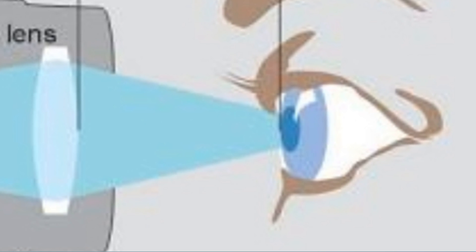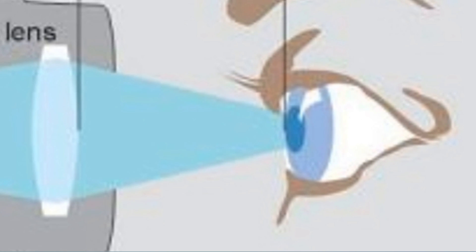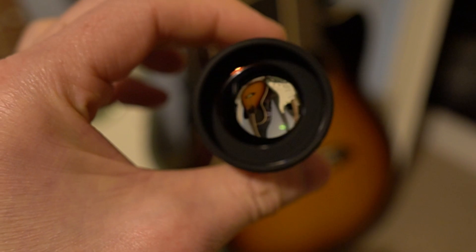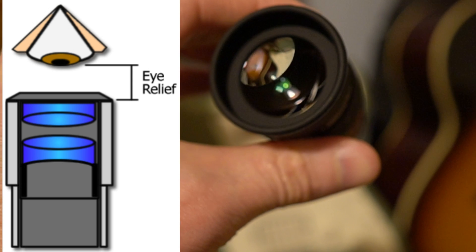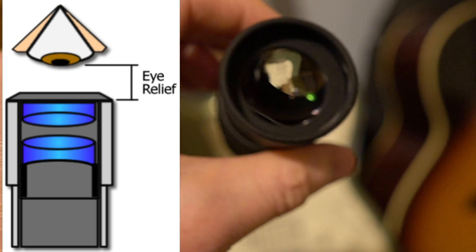To keep things concise, I'll mention just one more important consideration when choosing eyepieces for your telescope. Eye relief is how far you can place your eye away from the eyepiece while still being able to see the full field of view.